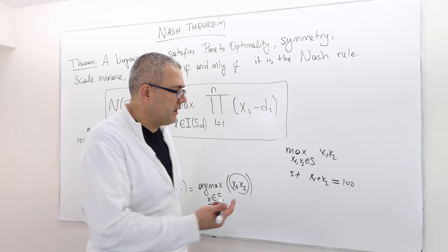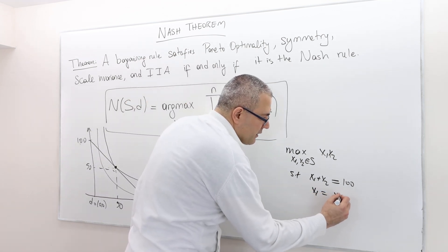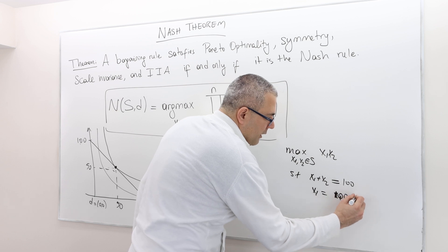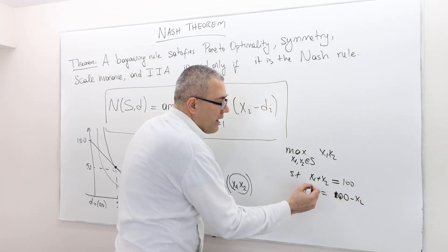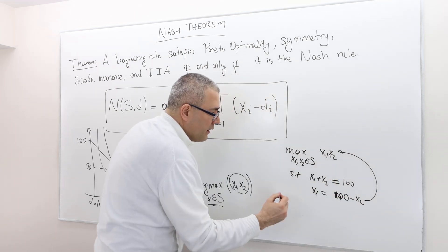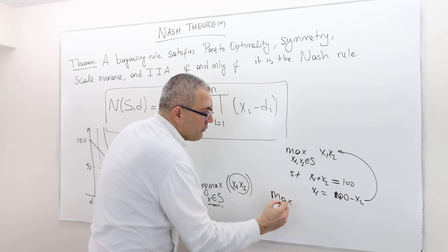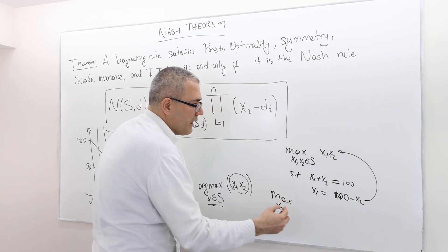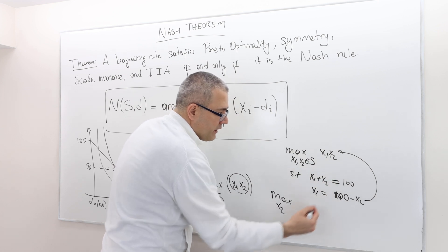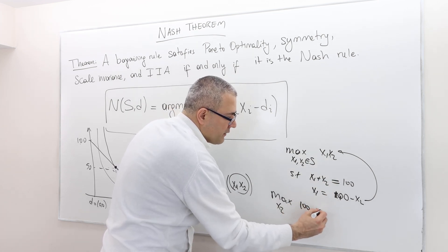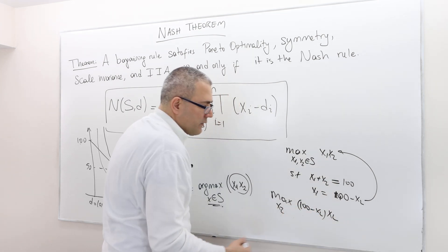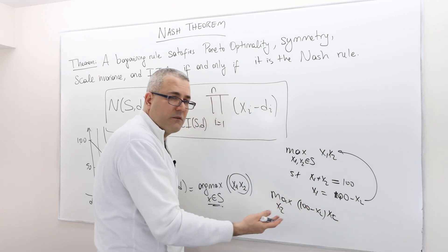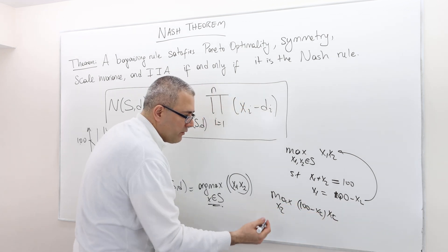And then just solve this maximization problem. I think the solution is very easy. How so? Write X1 as 100 minus X2, and then plug this into here. So your maximization problem becomes maximized by choosing X2, where this X1 times X2 becomes 100 minus X2 times X2. So you take the derivative with respect to X2, set it equal to 0.